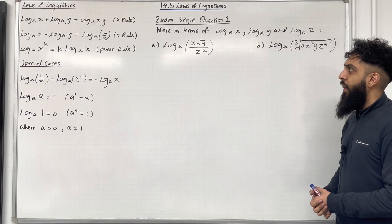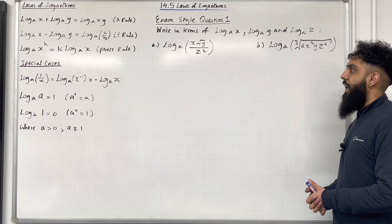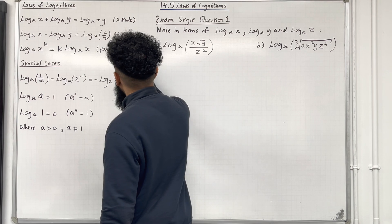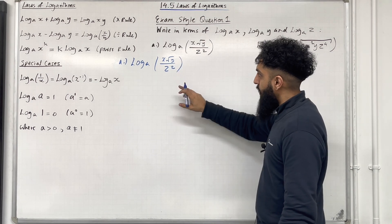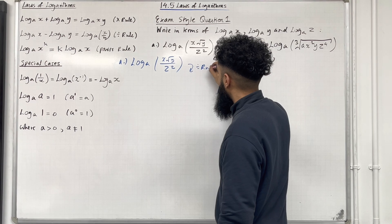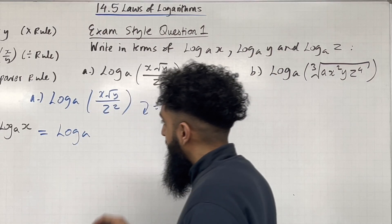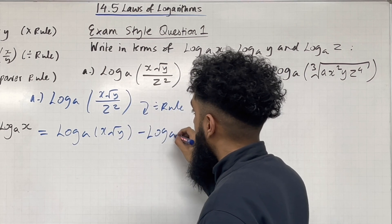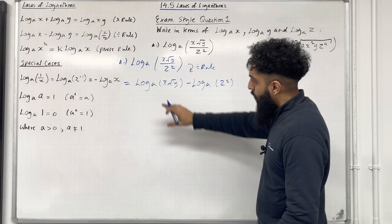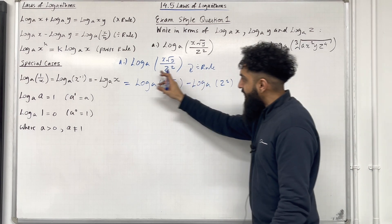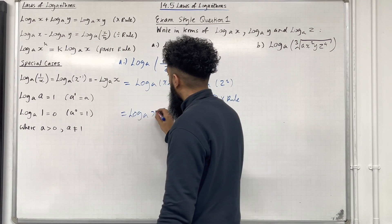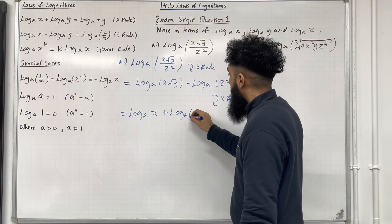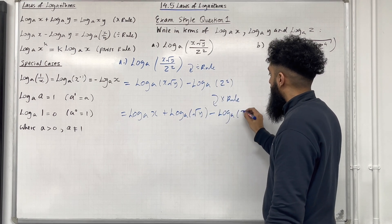Here is exam style question 1. Write in terms of log base A of x, log base A of y, log base A of z — part A: log base A of x times square root y divided by z squared. So we have log base A of x square root y divided by z squared. Inside the logarithm we have a division, so we can split this using the division rule: log base A of x square root y take away log base A of z squared. Inside this logarithm we have a product of two terms, x and square root y, so we can split this using the multiplication rule: log base A of x plus log base A of square root y minus log base A of z squared.